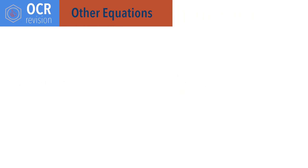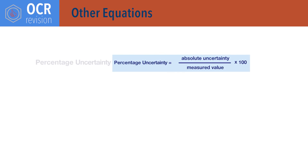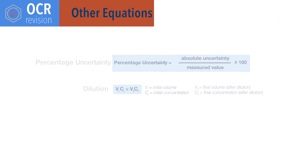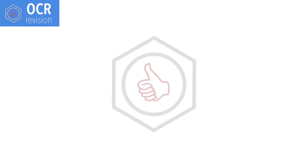Other equations. Percentage uncertainty equals absolute uncertainty divided by the measured value, times 100. Initial volume times initial concentration equals final volume times final concentration — this can be useful for calculating volumes needed for dilutions. I hope you found this video useful. Please check out other relevant videos in the description below, and visit chemistrystudent.com for free notes and resources.